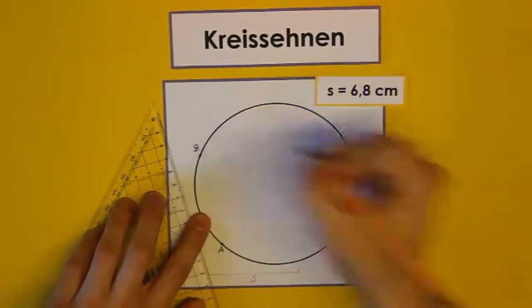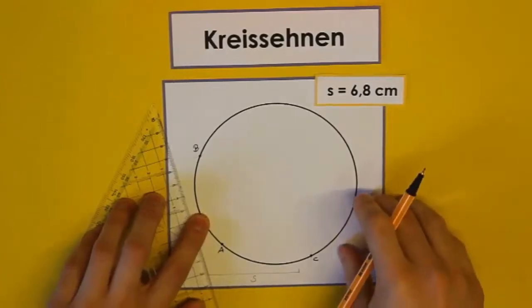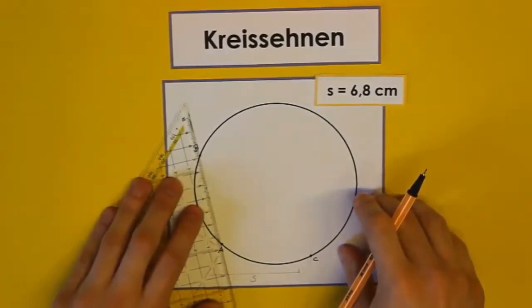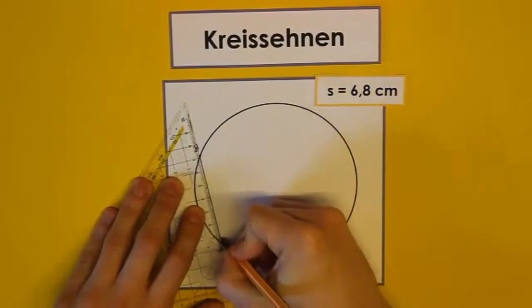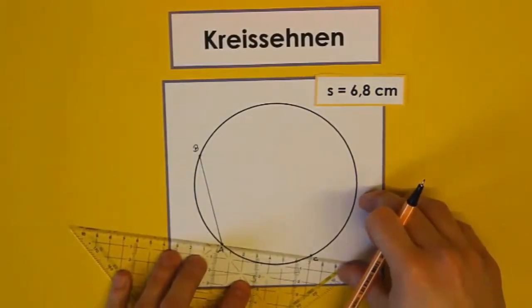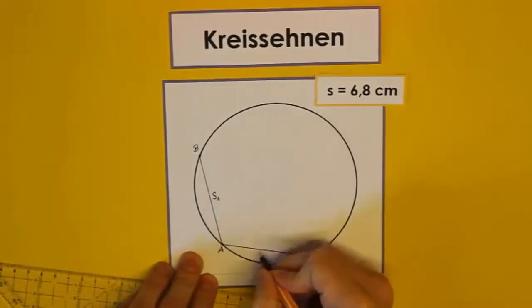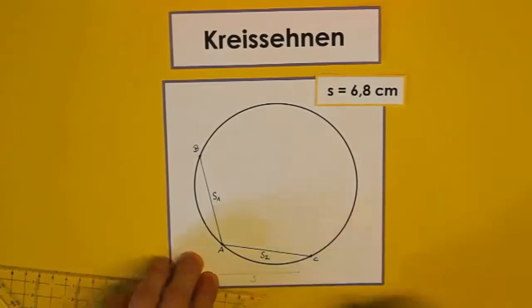Diese Punkte beschriften wir jetzt mit B und C. Das sind jetzt unsere Endpunkte für die Kreiszehnen, also wir haben jetzt zwei Kreiszehnen bekommen. Und diese Punkte verbinden wir jeweils mit unserem Startpunkt A und erhalten, wie ihr sehen könnt, zwei Sehnen. Die erste Szene beschriften wir jetzt einfach wieder mit S1 und die zweite Szene beschriften wir mit S2.